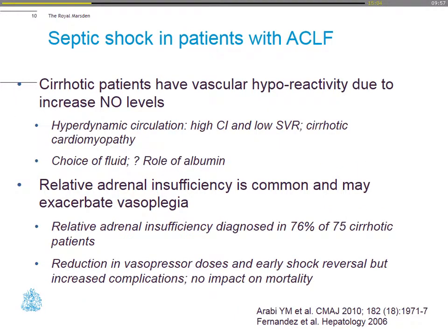In septic shock with acute-on-chronic liver failure, cirrhotic patients have vascular hyperreactivity, so they have a hyperdynamic circulation with high cardiac output and low SVR. They often suffer from cirrhotic cardiomyopathy. There's a lot of controversy about the choice of initial fluid in septic shock management in these patients, with increasing evidence perhaps for the role of albumin—early use of albumin.